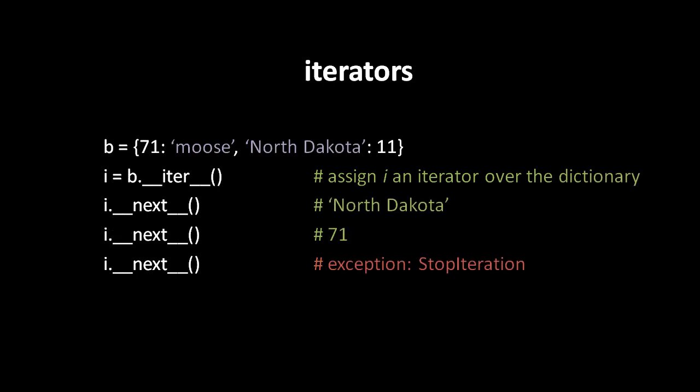We can also create iterators over maps. Here we have a dictionary with two items — the key 71 with value 'moose', and a key 'North Dakota' with value 11. We create an iterator over the dictionary and invoke next twice, getting the two keys of the dictionary in no particular order. The third call to next raises a StopIteration exception because we've exhausted the iterator. With map iterators, be clear on two points: first, you're iterating over just the keys, not the values; and second, you iterate over the keys in no particular order.